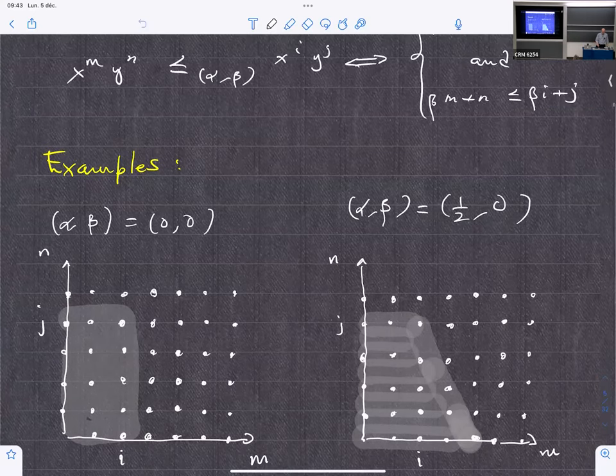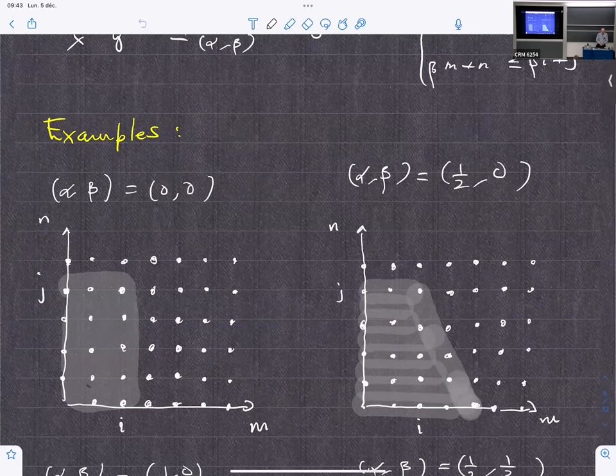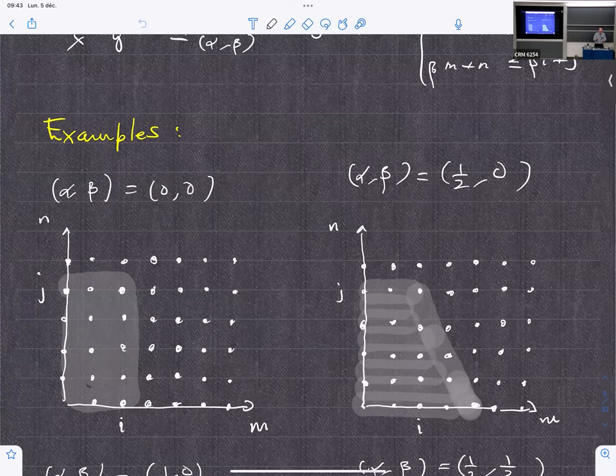A class on which we can say much more is the class of the P-polynomial schemes. What happens then? Well, these adjacency matrices A_i can be written as a polynomial V_i of A_1.